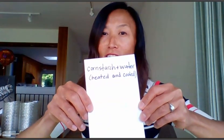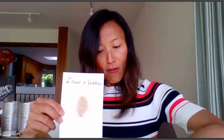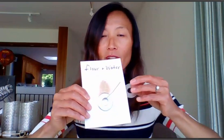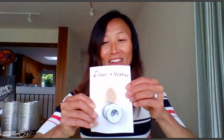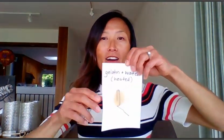Corn syrup held four washers and cornstarch and water held five. Now we'll move on to flour and water. We're going to see how many washers it takes before the paper clip falls: one, two, three, four, five, six, seven, eight, nine, ten! Wow — ten washers! Did you predict that? That is strong!